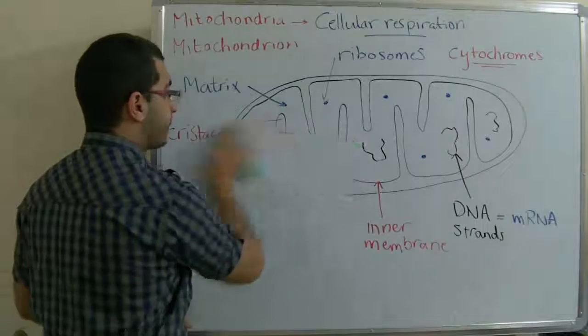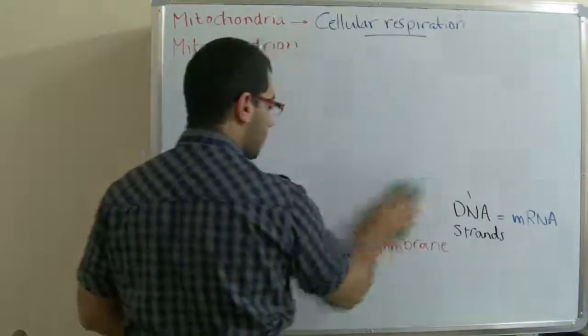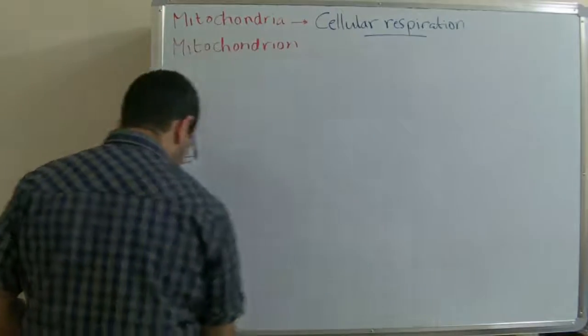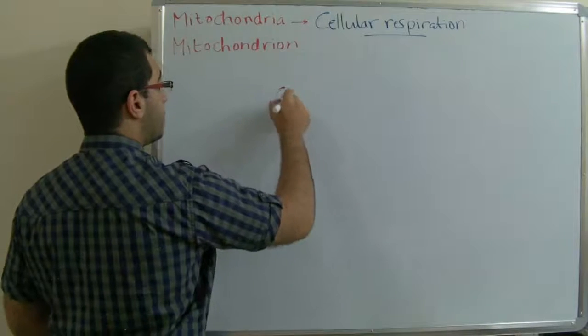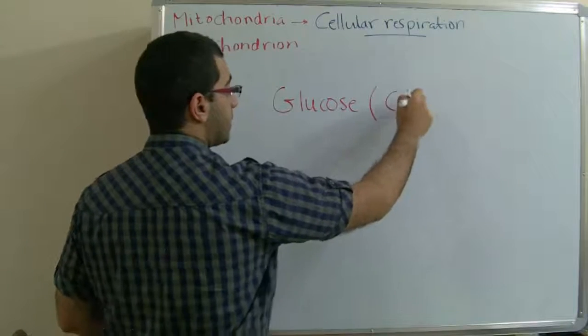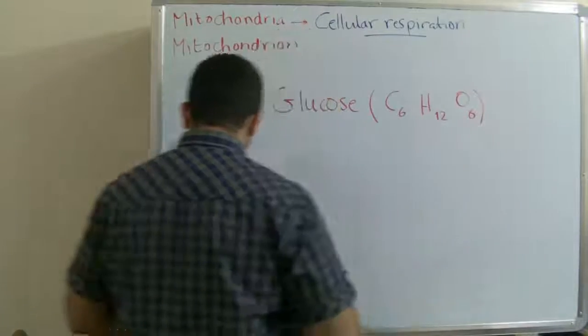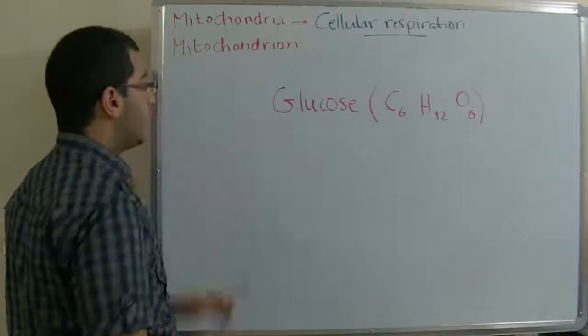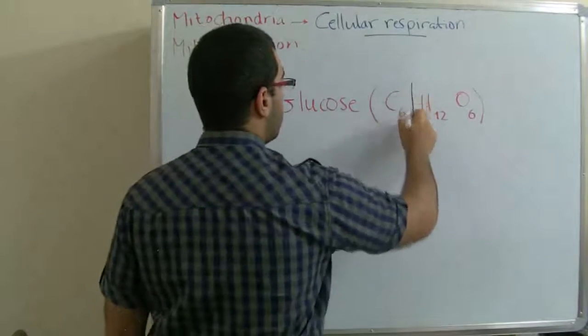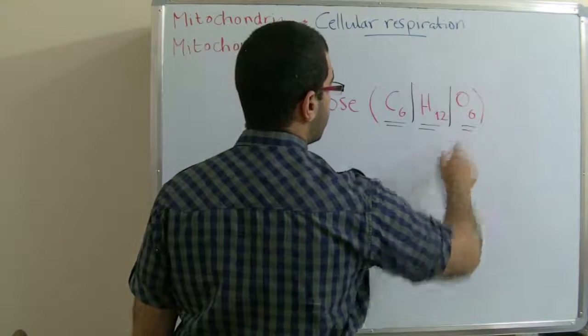At last, we have to know the structure of the glucose molecule is C6H12O6. During the three steps of the cellular respiration, the glucose molecule loses the carbon content, hydrogen content, and the oxygen is released.